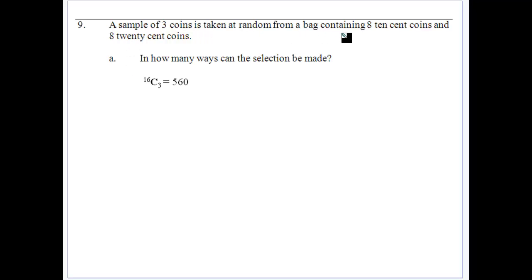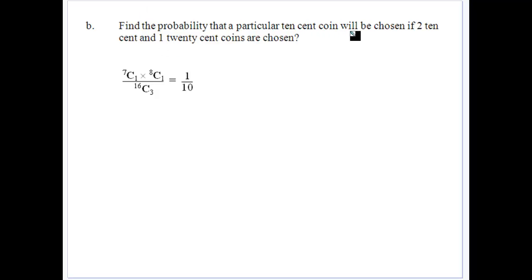We have a sample of three coins taken from a bag containing eight 10 cent coins and eight 20 cent coins. So basically, if we can get any selection, well, there's 16 coins. We can get three different coins chosen out of the 16. And what's the probability that one particular 10 cent coin will be chosen if two 10 cents and one 20 cent are chosen? So if one 10 cent is already chosen, that means we've only got one 10 cent piece to be chosen from the seven remaining and we've got one out of the eight 20 cent pieces to be chosen. So the 7C1, 8C1 over 16C3, which is the total, gives us a one tenth of a chance.